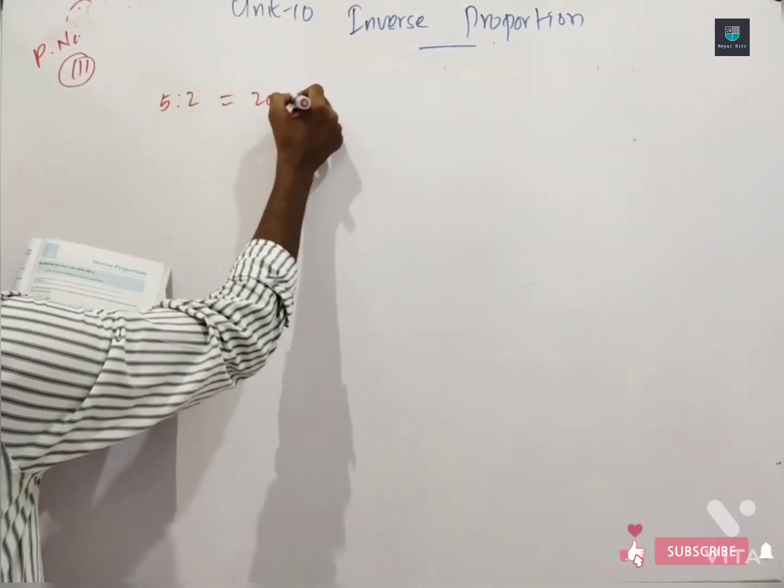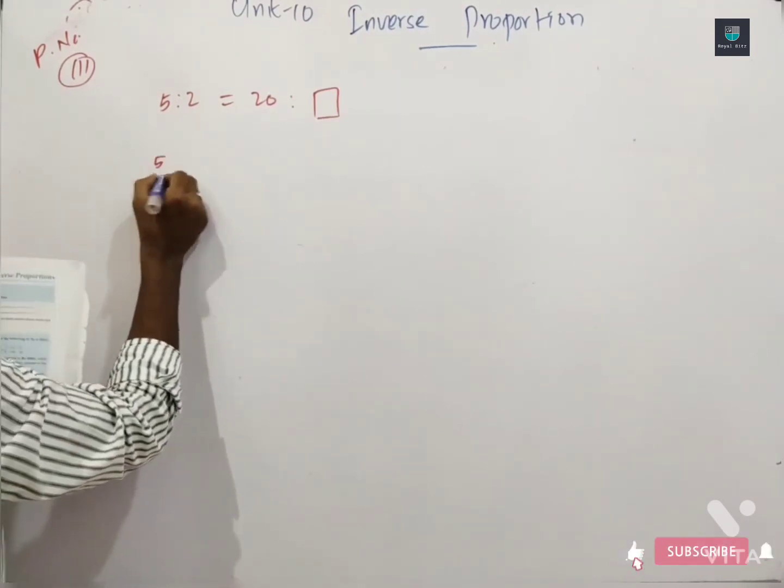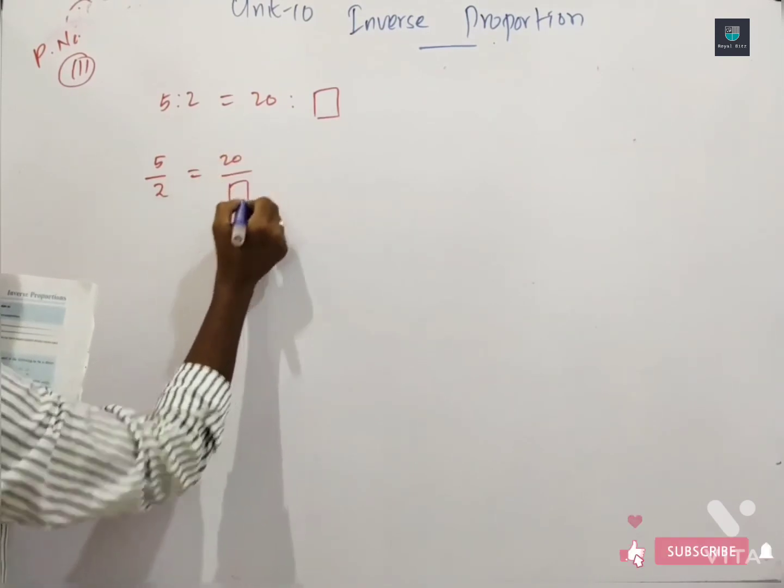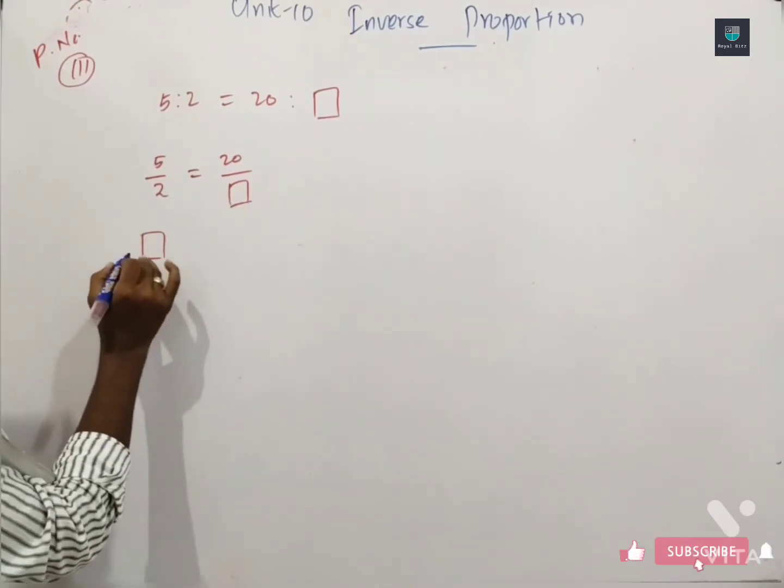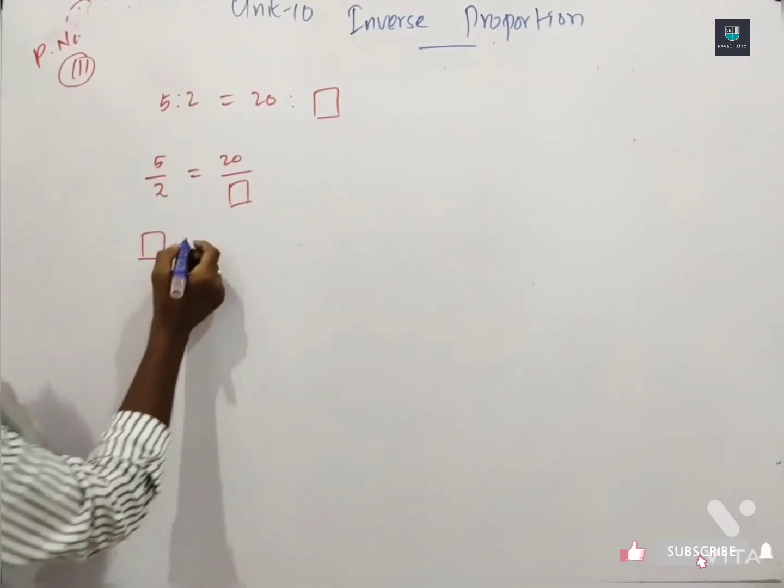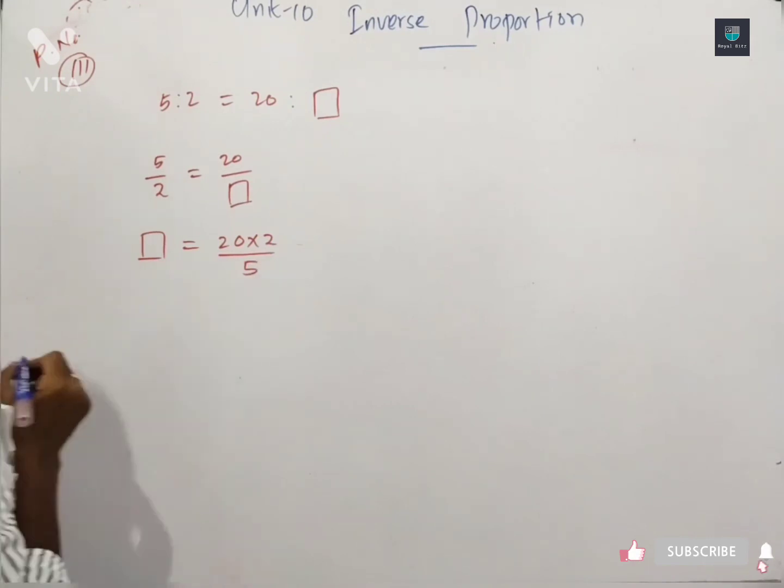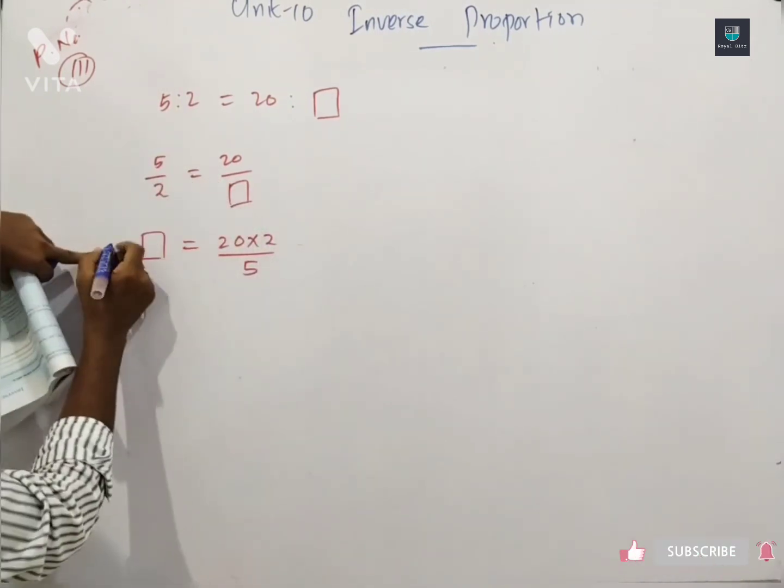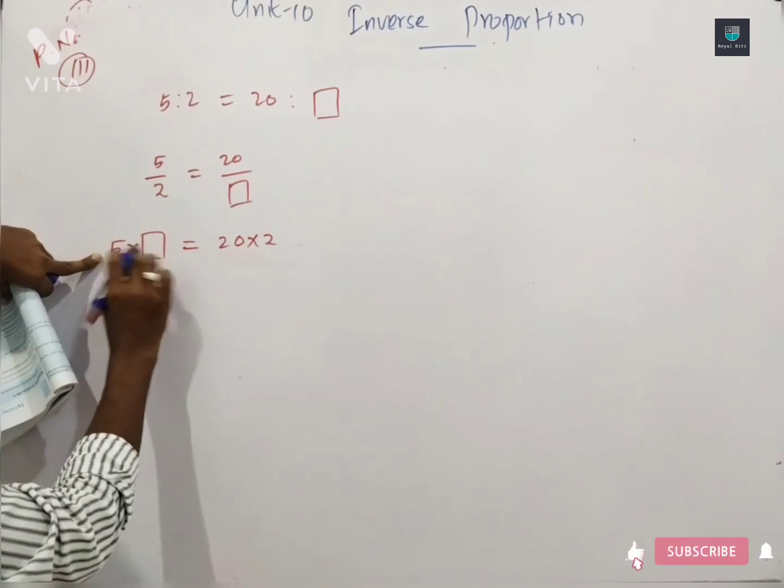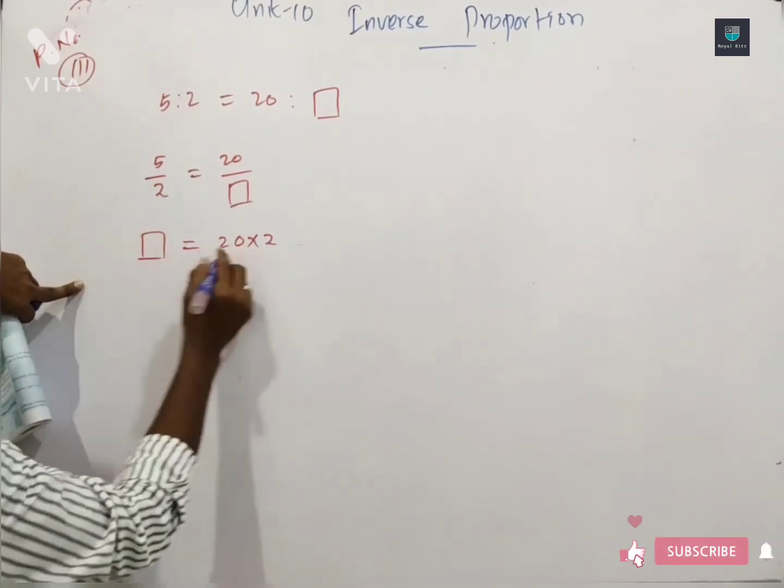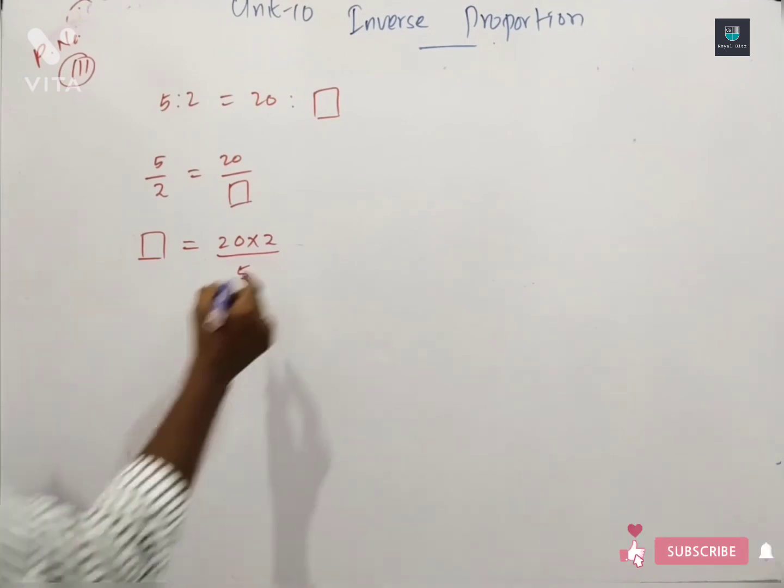So this is direct proportions. 5 to 2 is equal to 20 to what? How do you do this? Simply we are converting into fractions. 5 over 2 is equal to 20 over box. We are putting the x. This box is equal to what? 20 multiplied 2 by 5. 5 times this, and 2 times 20. So after equations, you can find that, this one.